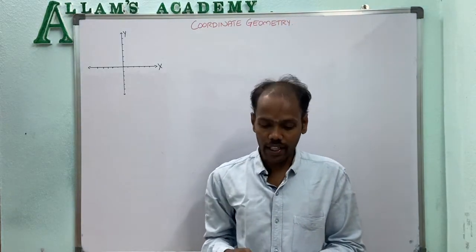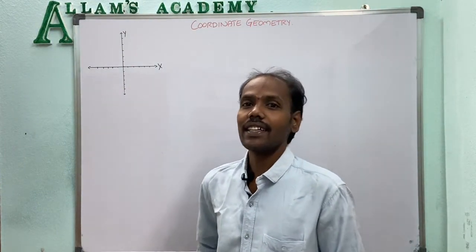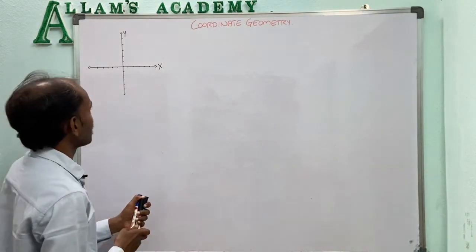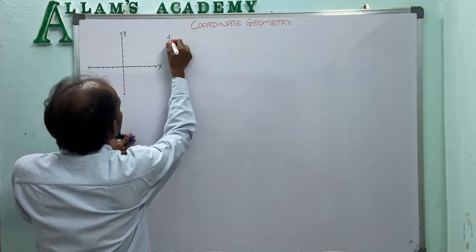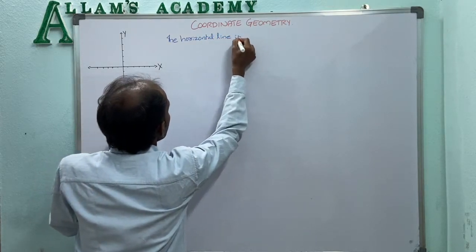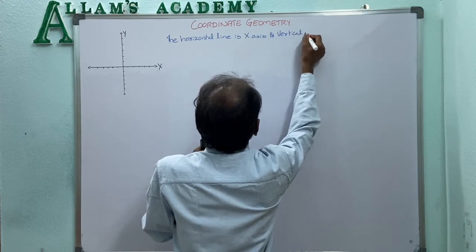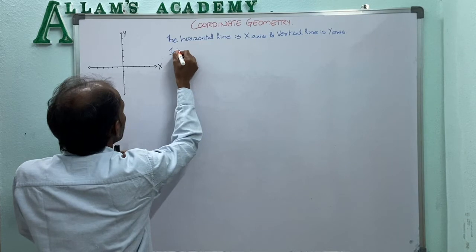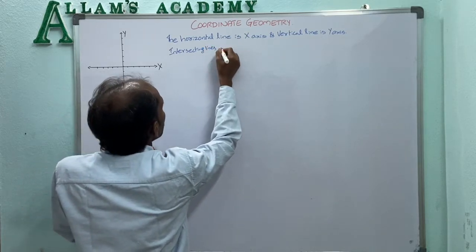In coordinate geometry, the horizontal line is called the x-axis and the vertical line is called the y-axis. The intersection point of the x-axis and y-axis is called the origin.